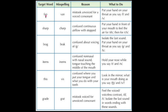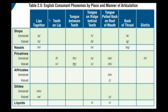We have fan as the word we want them to spell, and they spell it V-A-N. When I look at these two words, something's happening here to confuse them between the F and V sound. And if we look back at the consonant chart, we can see that they are a voiced and unvoiced pair.